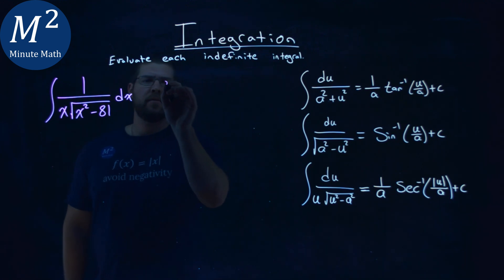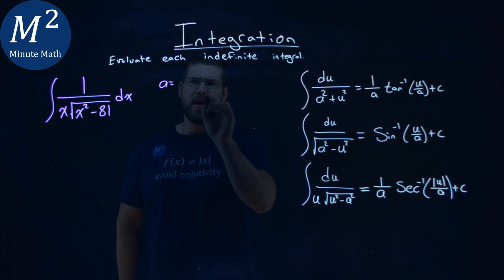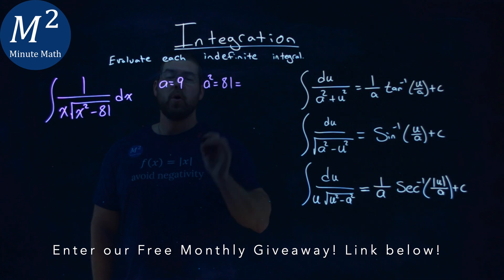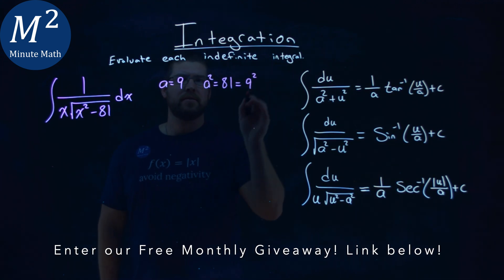So let's see if we can find a u value and an a value that line up here. Let's start with the a value. Well, we have an 81 right here where the a squared would be. If our a value is 9, our a squared, 9 squared, is 81. Or we can write that as 9 squared.